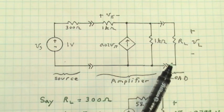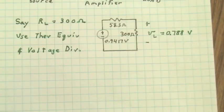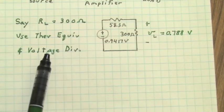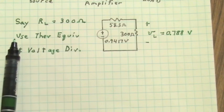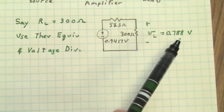We found the Thevenin equivalent looking back from the load. So for any given value of R sub L, we can easily find the output voltage by replacing the amplifier circuit with its Thevenin equivalent using voltage division. We would find that when VS was one volt in the source circuit, VL would be equal to 0.788 volts.